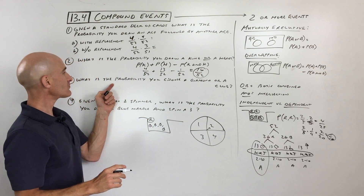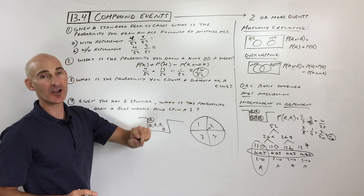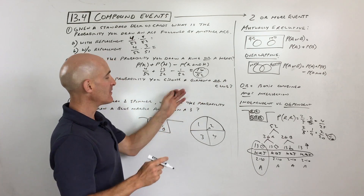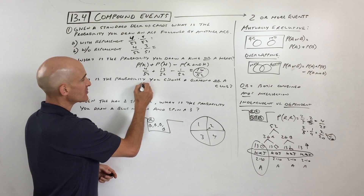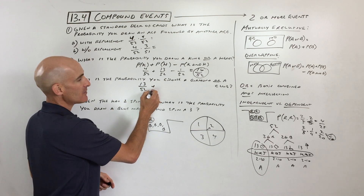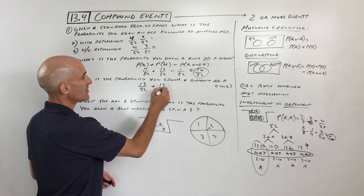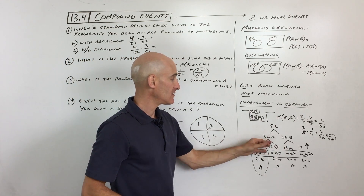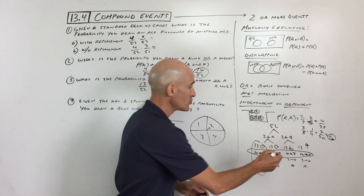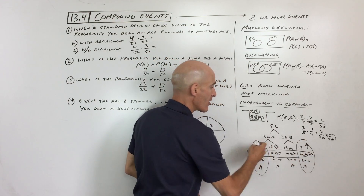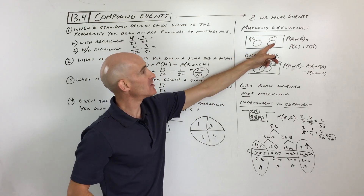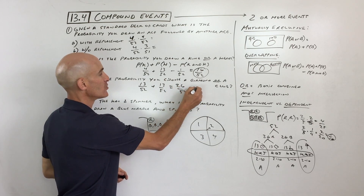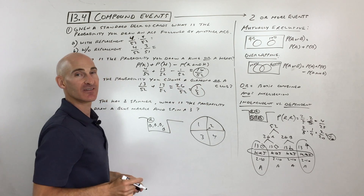What is the probability that you choose a diamond or a club? Remember, 'or' means union. There are 13 diamonds and 13 clubs. Are there any cards in both groups? No — these two groups are not overlapping, so they are mutually exclusive. You just add the two probabilities together: 26 out of 52, which reduces to one half.